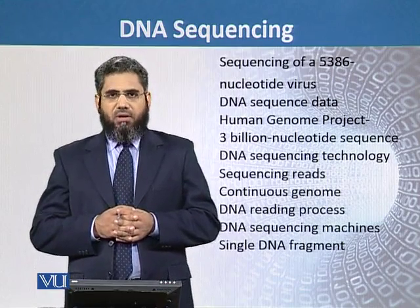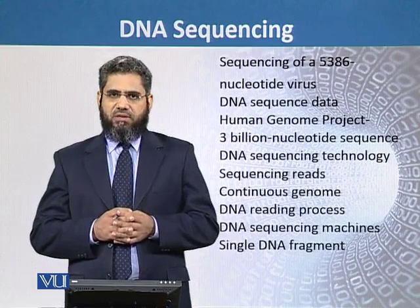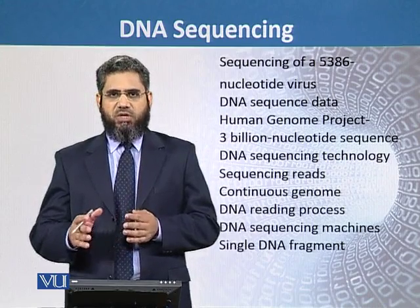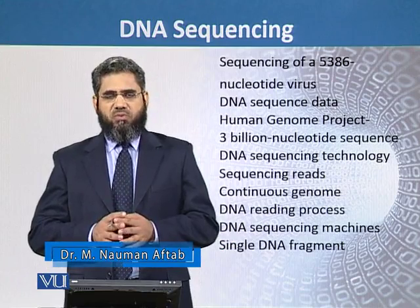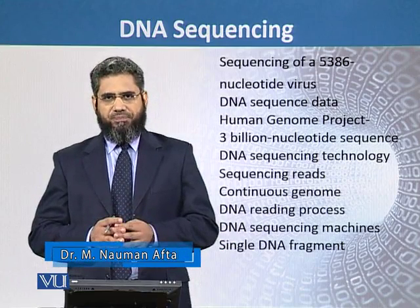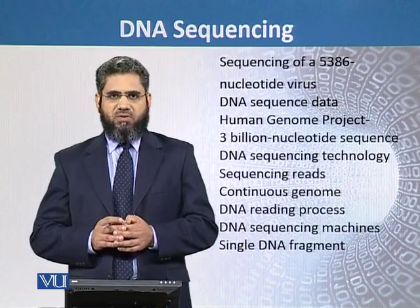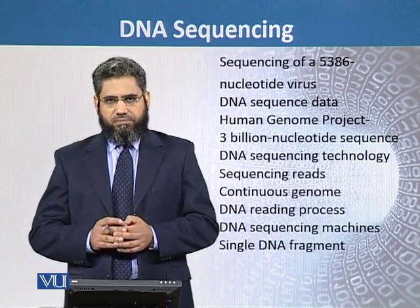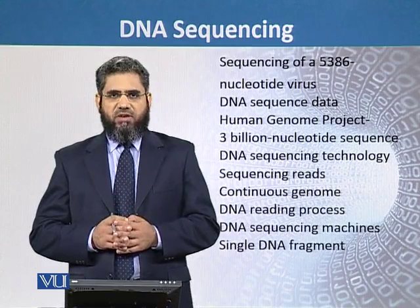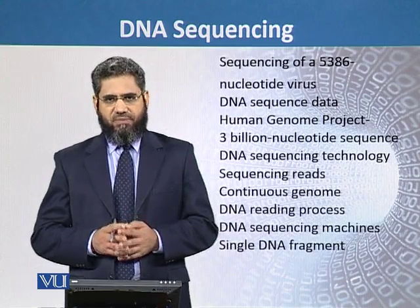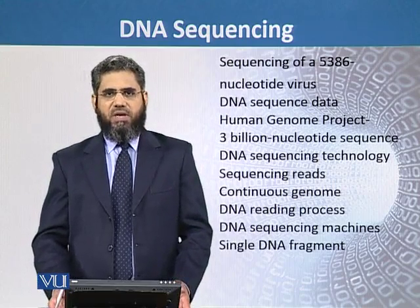Using this method, there was an increase in sequencing data at an exponential rate, and that rate increased even further when the Human Genome Project was started in 1988. After the completion of the Human Genome Project, approximately 3 billion nucleotides were sequenced. In the initial stage, the sequencing methods could only read 500 to 700 nucleotides, because those early methods had some limitations.